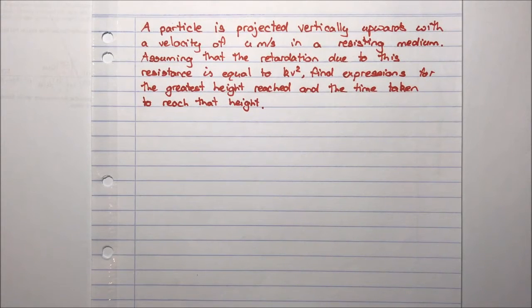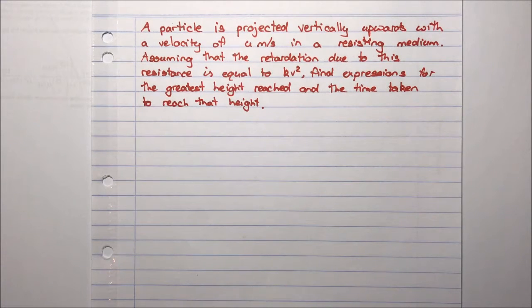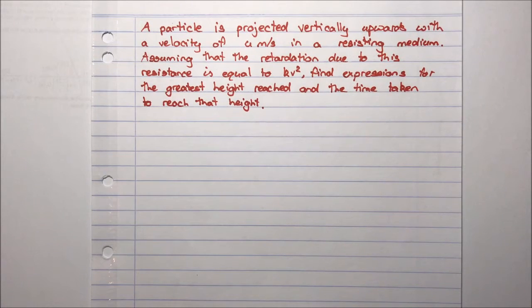A particle is projected vertically upwards with a velocity of u meters per second in a resisting medium. Assuming that the retardation due to this resistance is equal to kv squared, find the expressions for the greatest height reached and the time taken to reach that height.